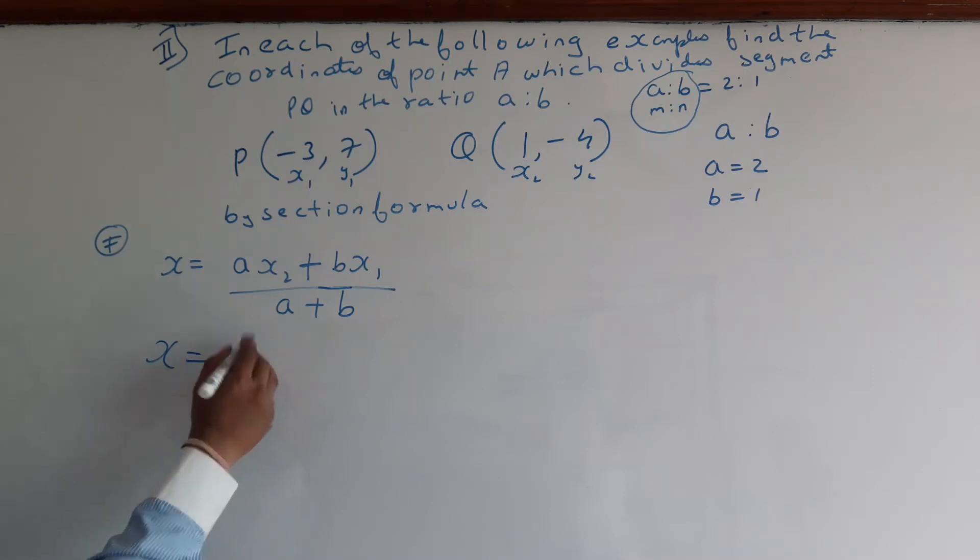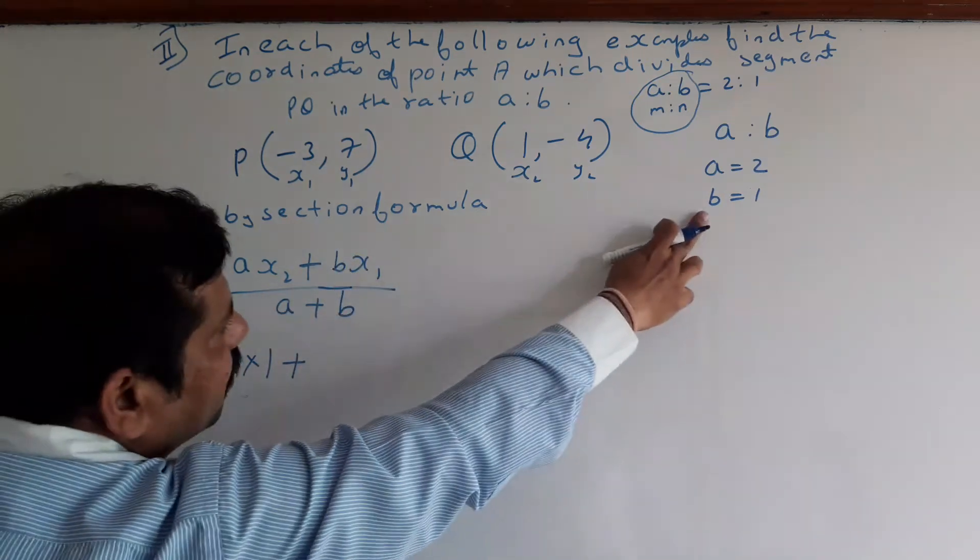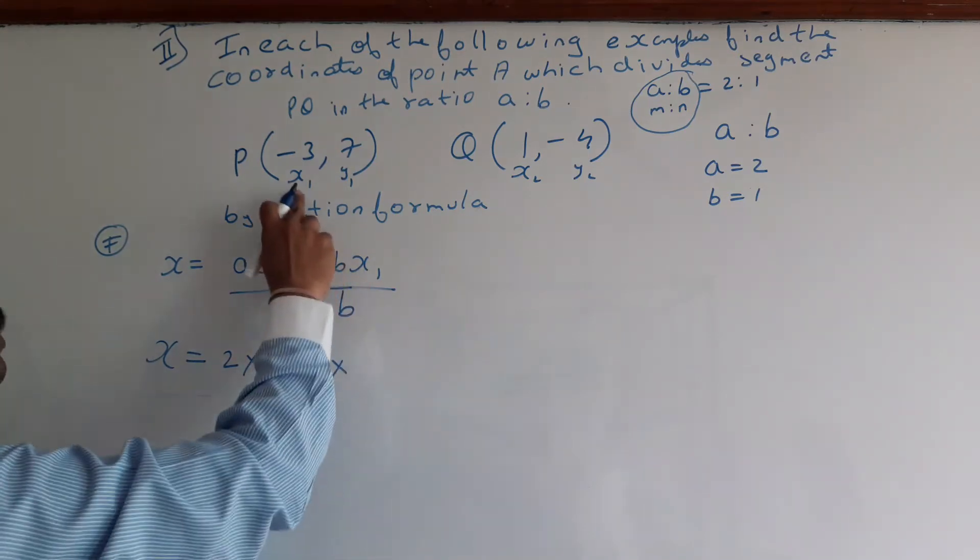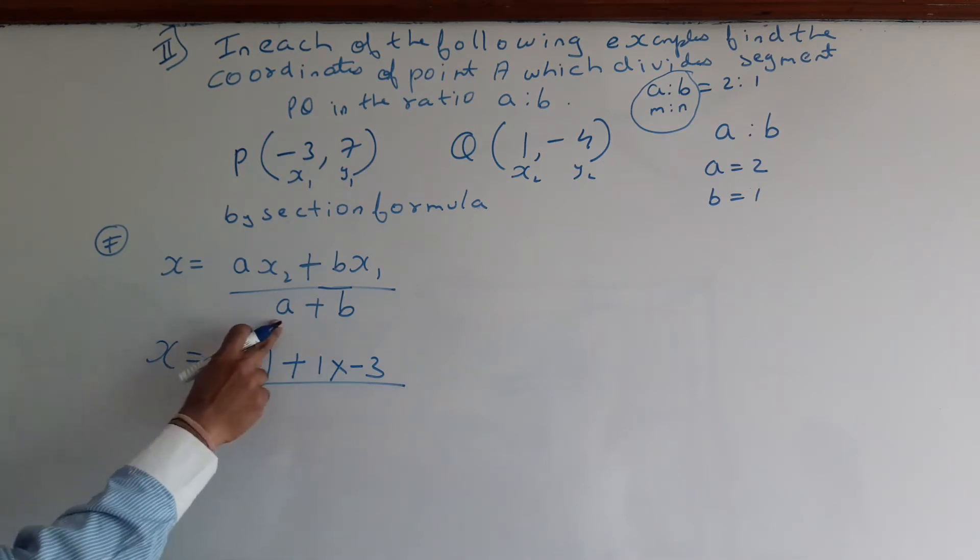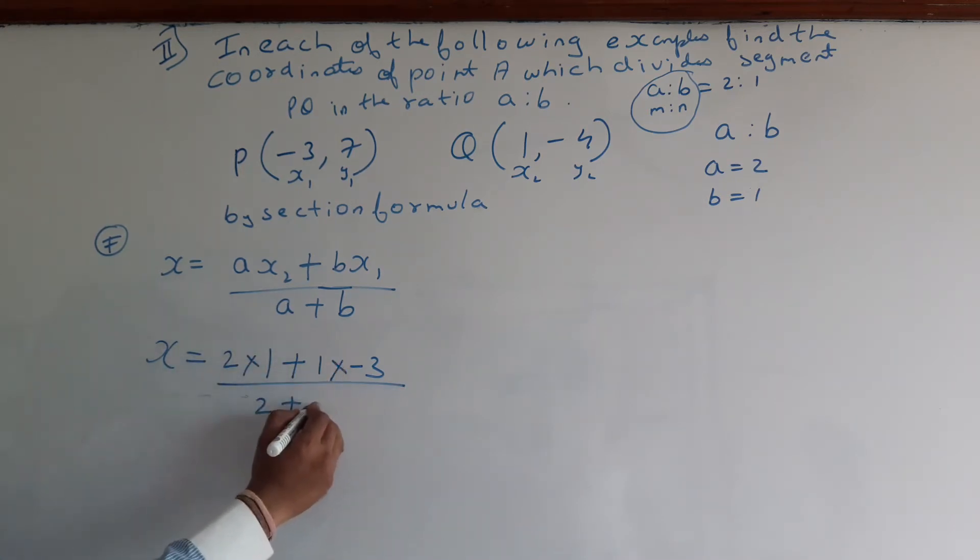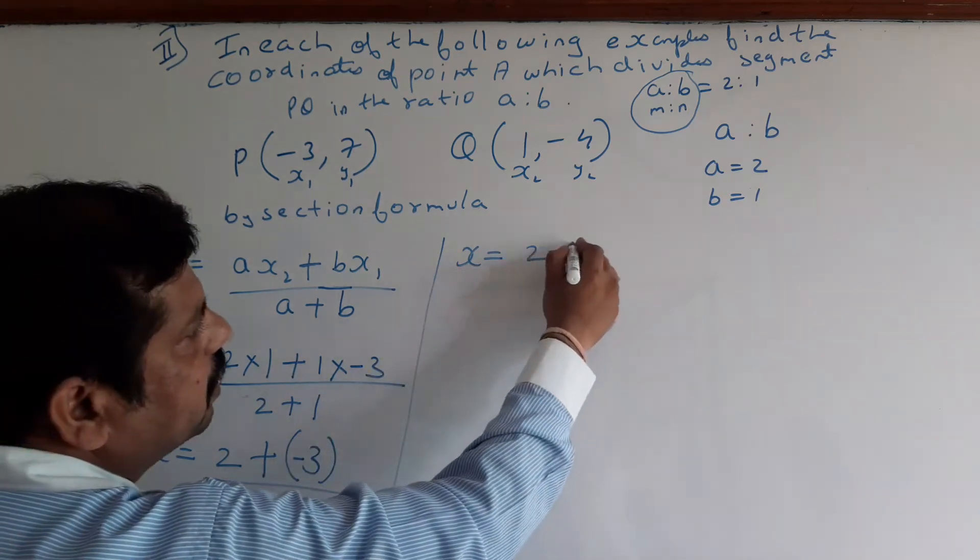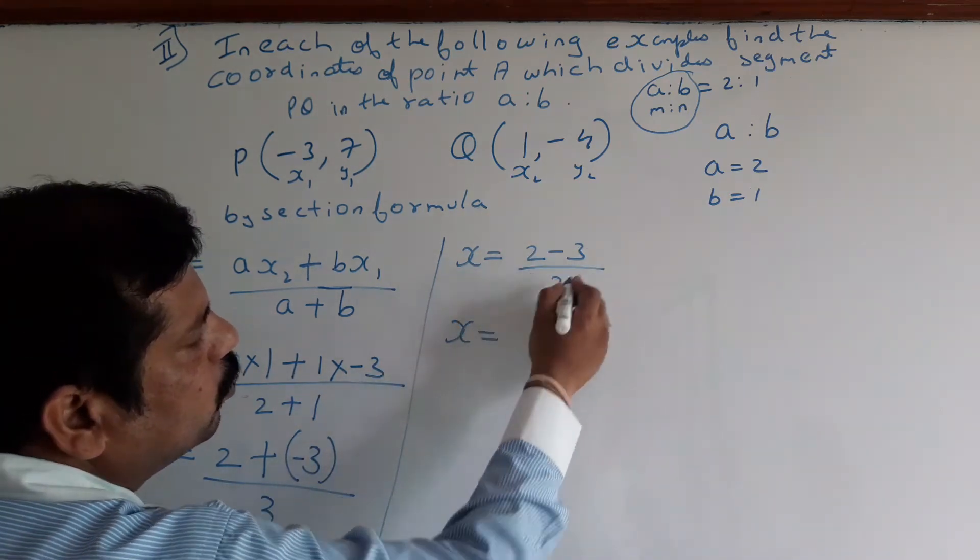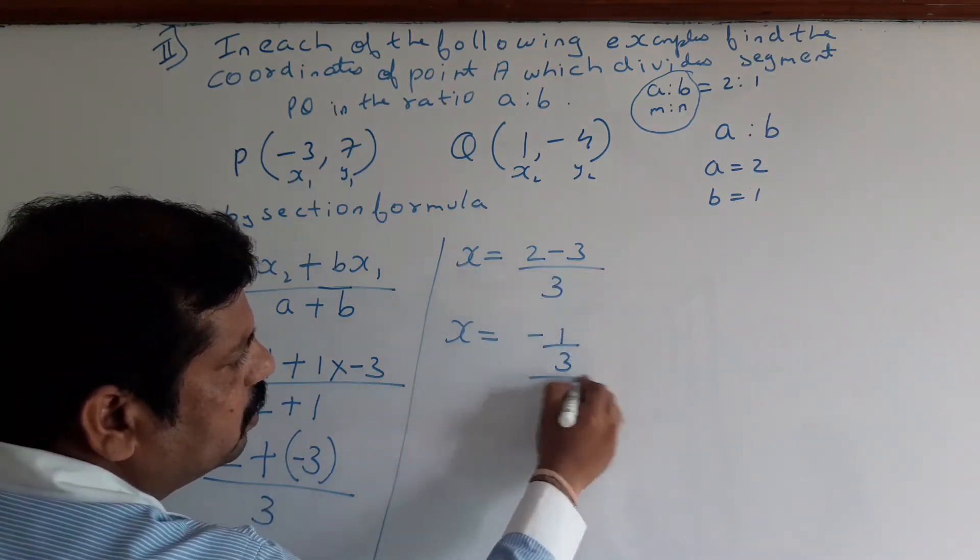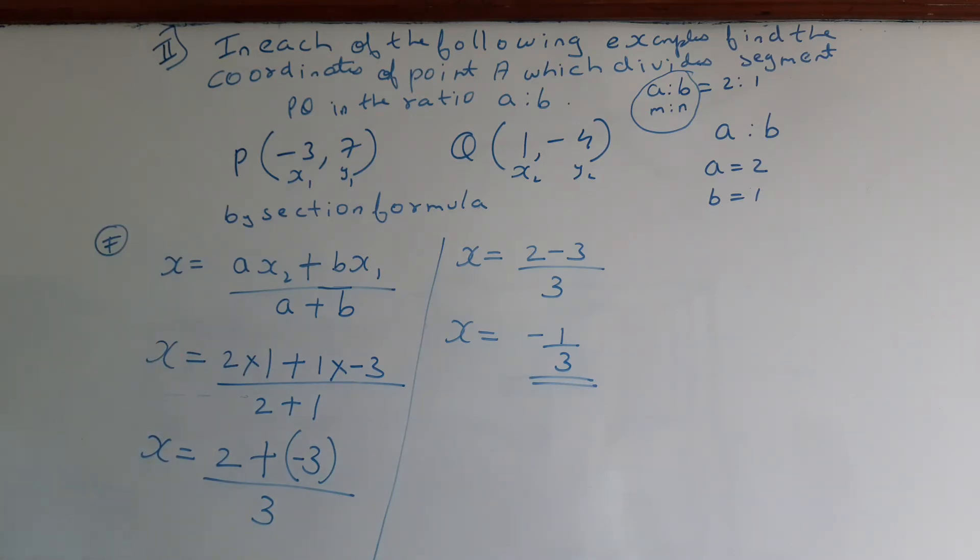So A equals 2 multiply by X2 which is 1, plus B which is 1 multiply by X1 which is -3, upon A which is 2 plus B which is 1. This gives (2×1 + 1×(-3)) upon (2+1) equals (2-3) upon 3 equals -1 upon 3. So X equals -1/3.